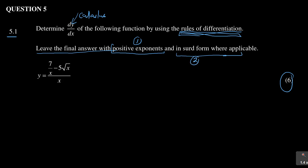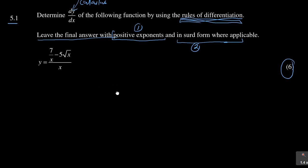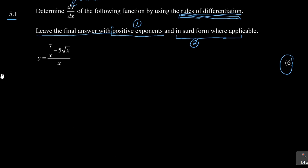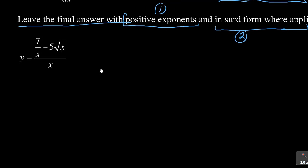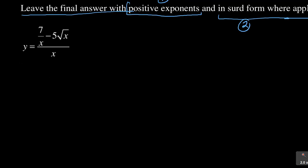That is one condition, and secondly, leave the answer in surd form where applicable. So that is part two. If you forget this, you are going to be penalized two marks. The aim is to score all six marks. So let us start with the question. We are given y equals that expression. Whenever you see a fraction, you need to remove that particular fraction before you can apply dy/dx.